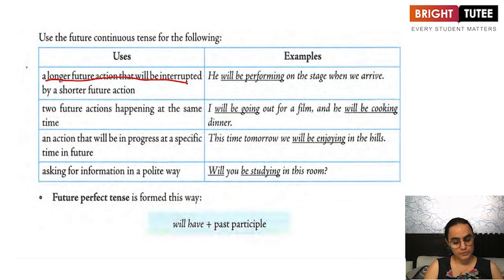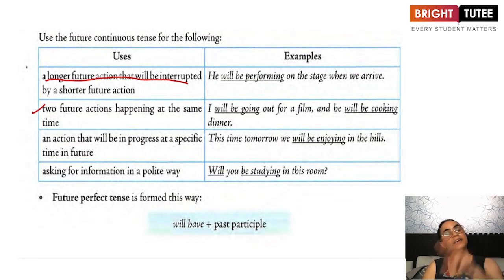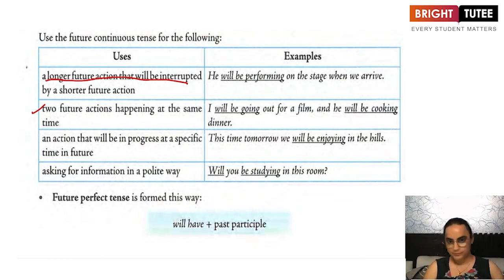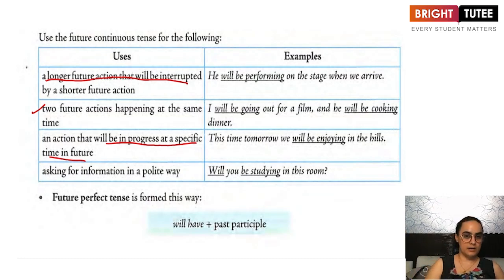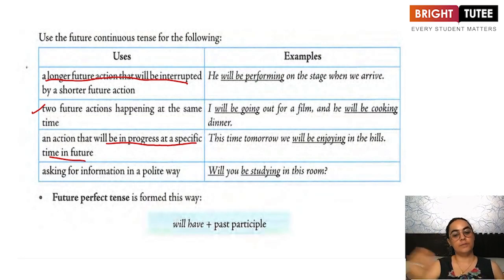The second use of the future continuous tense is to talk about two future actions taking place at the same time. For example: I will be going out for a film and he will be cooking dinner. I will be talking to my friend and he will be watching television. Third, when we talk about an action that will be in progress at a specific time in the future: this time tomorrow morning, he will be sleeping; this time tomorrow evening, I will be packing my bag; this time next month, we will be shifting to a new house.